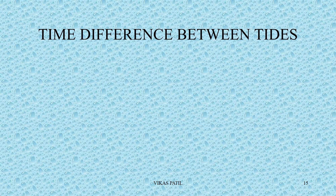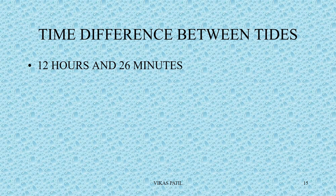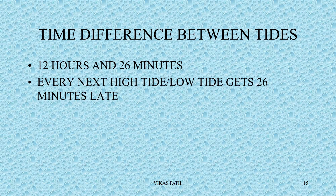Time difference between tides. There is a general understanding that the time between two high tides or two low tides is 24 hours, but that is not true. As the Earth completes one rotation, the moon also moves slightly ahead. So, one cycle of high tide and low tide actually takes 12 hours and 26 minutes. That means two full cycles take 24 hours and 52 minutes — one hour extra. So every next high tide or low tide gets 26 minutes later.